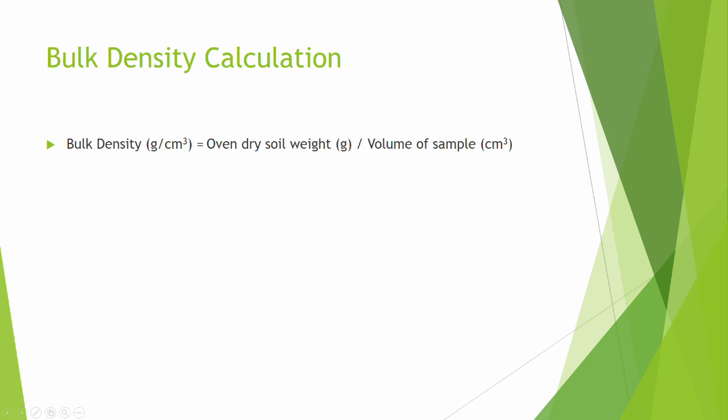To calculate the bulk density, simply divide the dry mass of the soil by the volume of the soil.